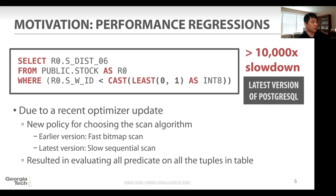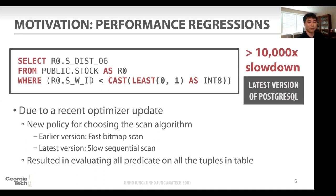Let me show one simple example. This query looks very simple, but it shows more than 10,000 times slowdown on the latest version of Postgres. The reason is because of an optimizer update. The developer made a new policy for choosing the scanning algorithm — only if the latest version has enough memory does it choose the bitmap heap scan. But this query was overestimated by the optimizer, treated as a big-sized table, so the latest version chose the slower sequential scan. The result is evaluating all predicates on the old tuples in the table, causing more than 10,000 times slowdown.